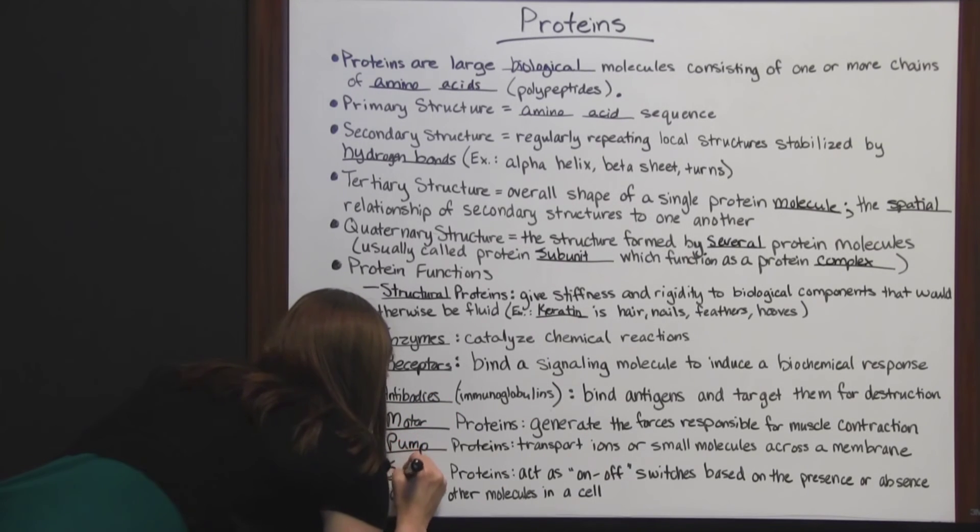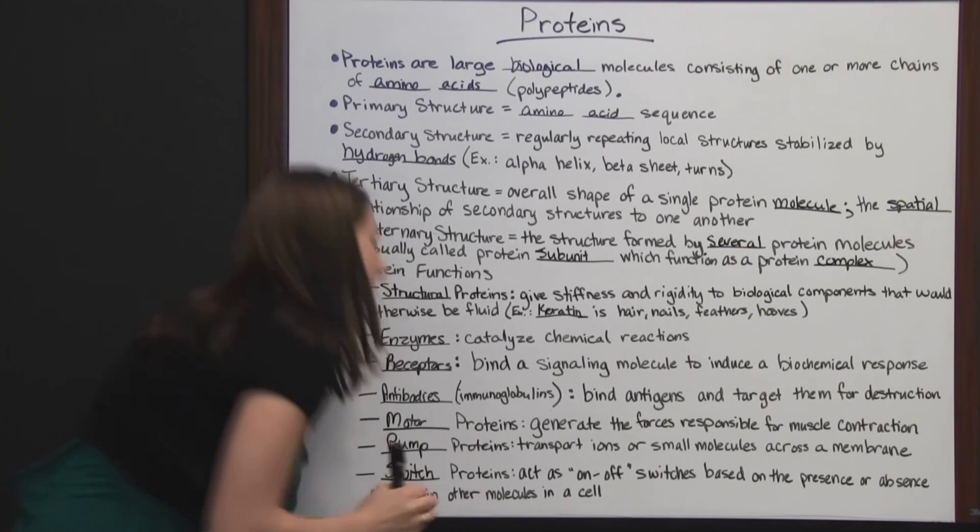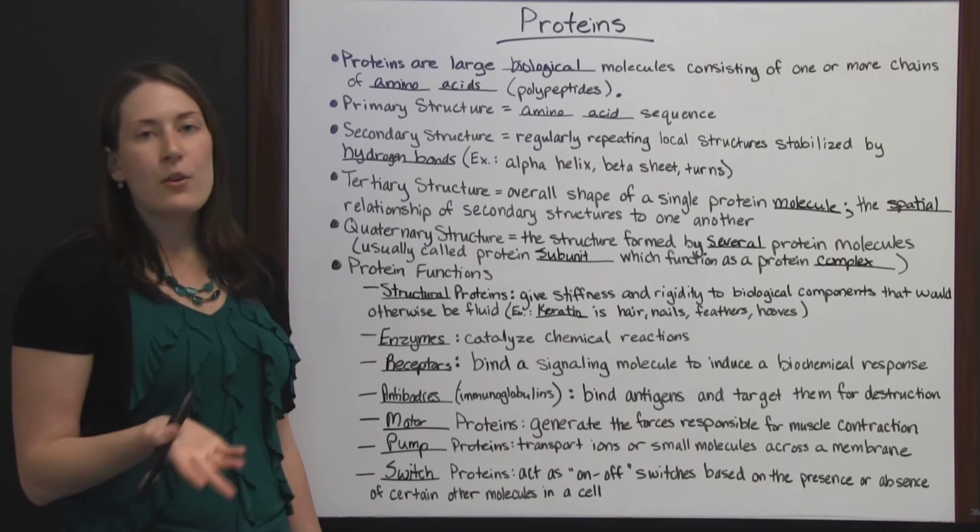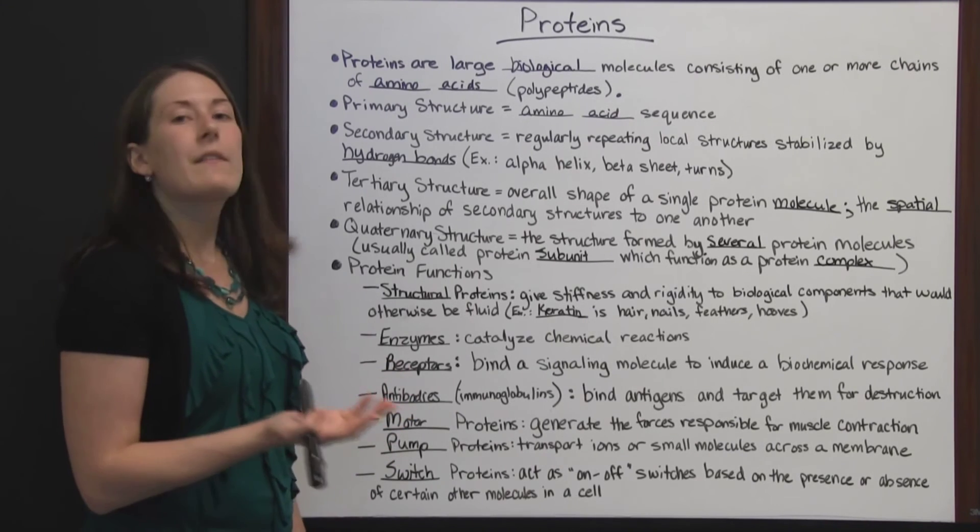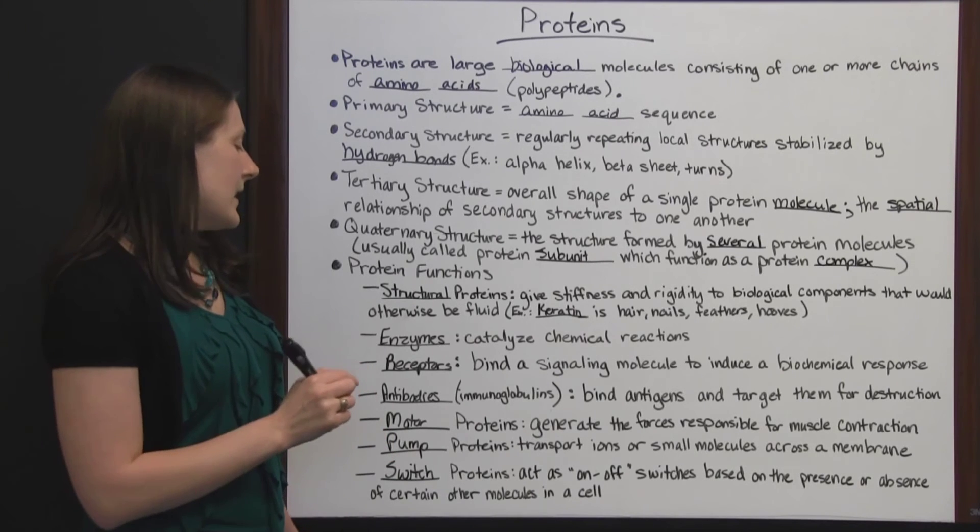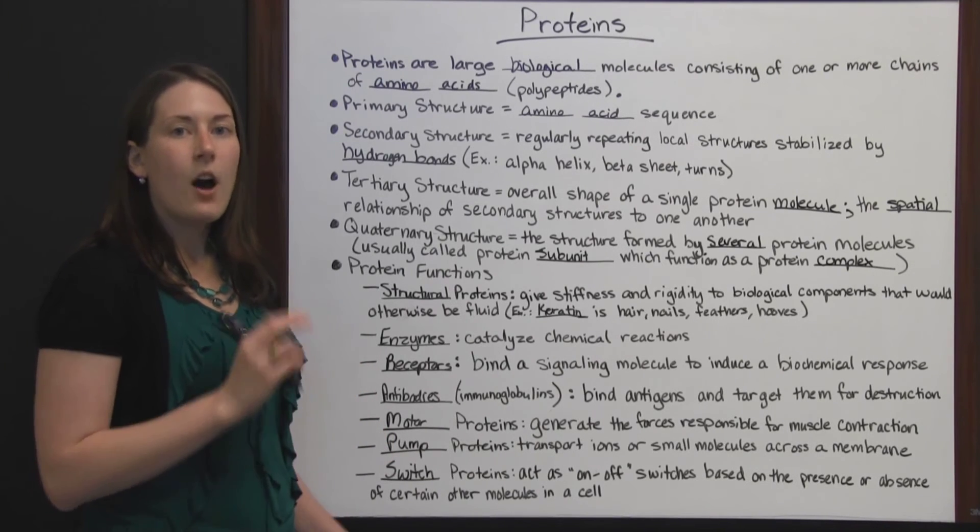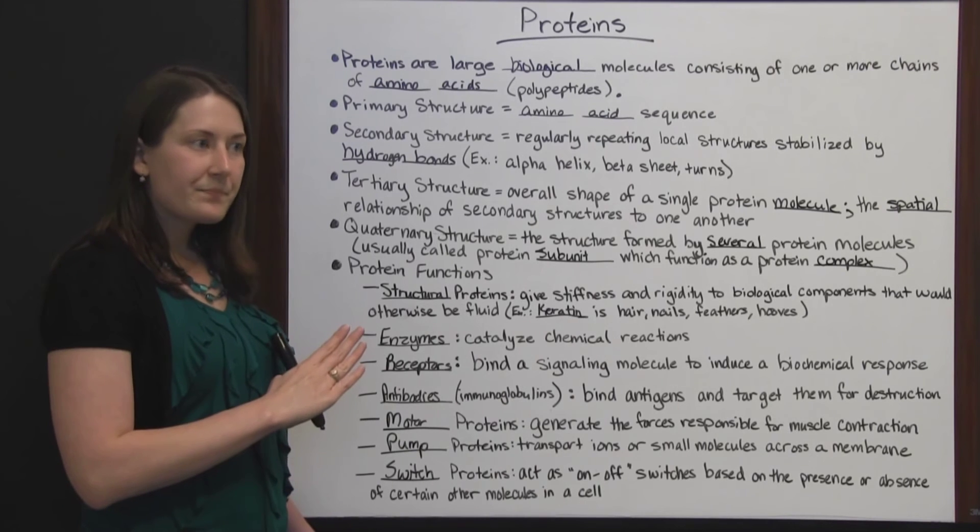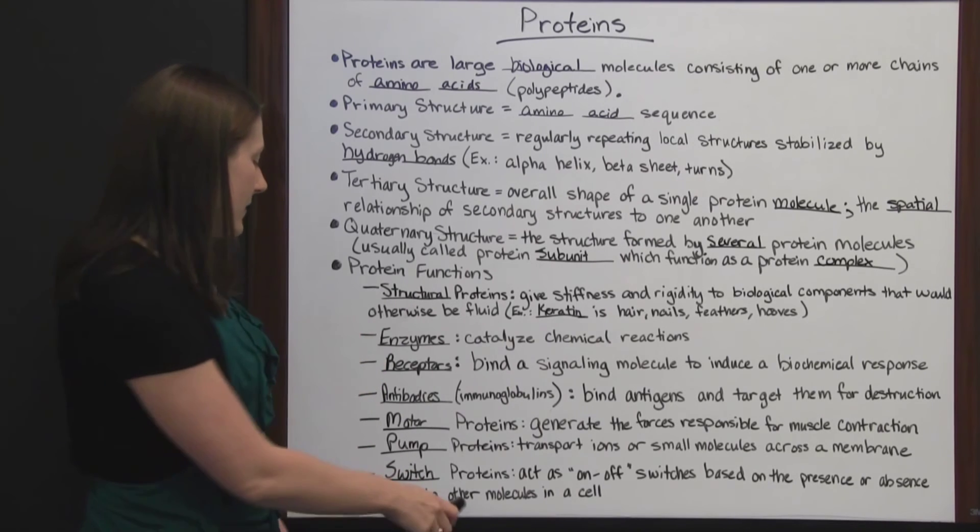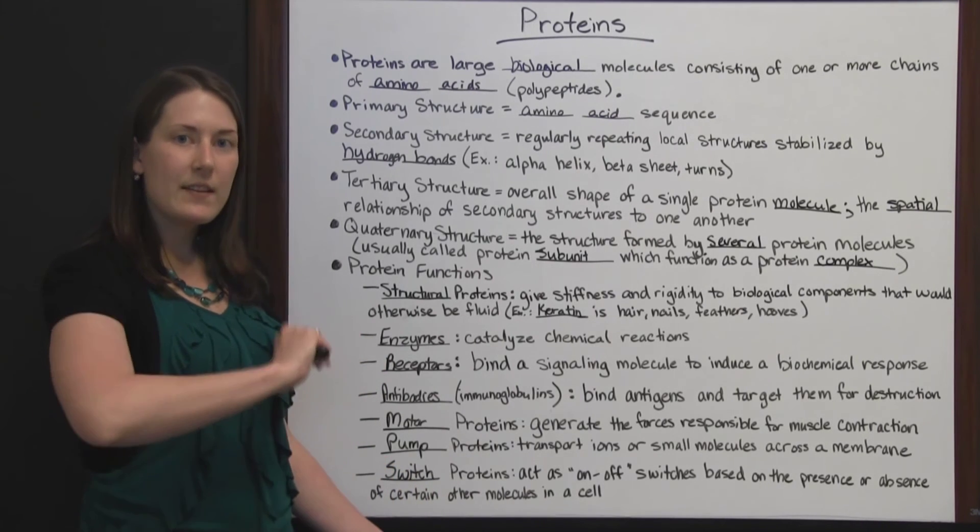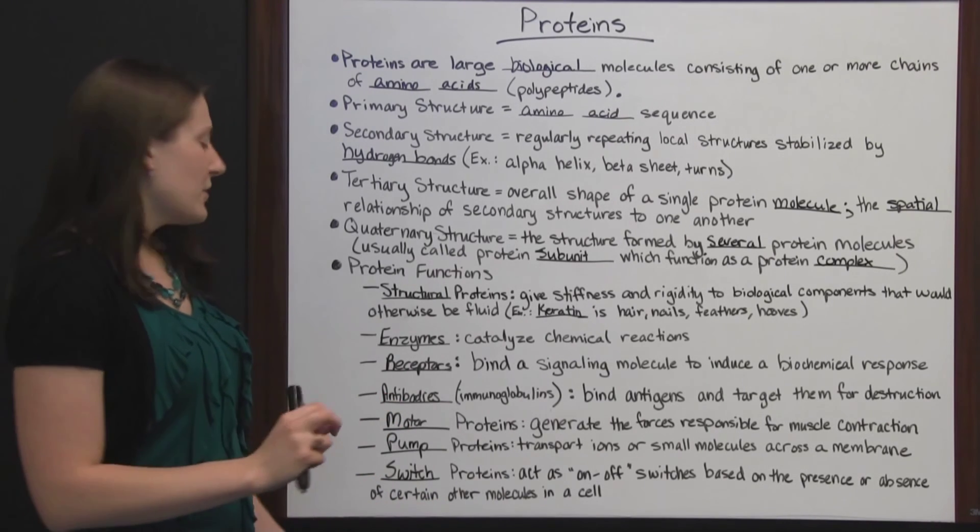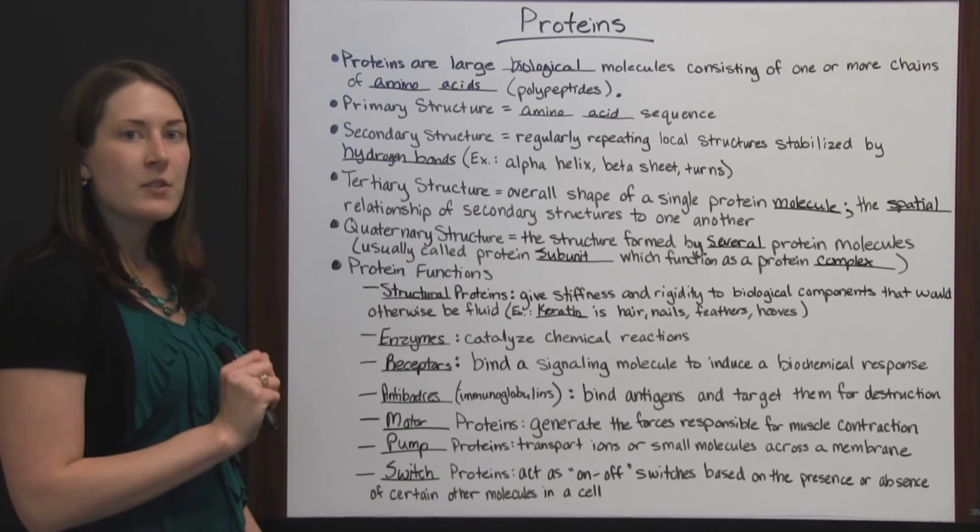Lastly, we've got switch proteins. These act as an on-off switch based on the presence or absence of certain other molecules in the cell. If a cell was waiting for a certain molecule to be present to do something, then the switch protein is going to act as an off switch and keep the cell from performing that function until the certain molecule it's waiting on is present. Once it's present, it flips the switch and says, basically, it's on. It can perform this function now. It acts as an on-off switch for the cell.